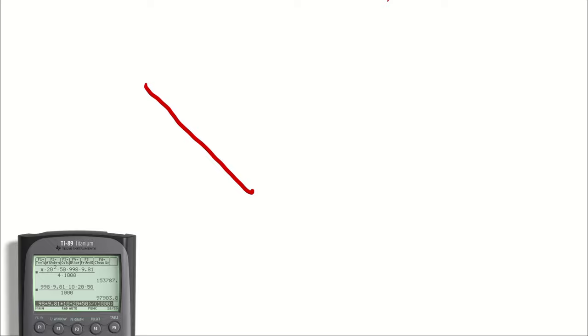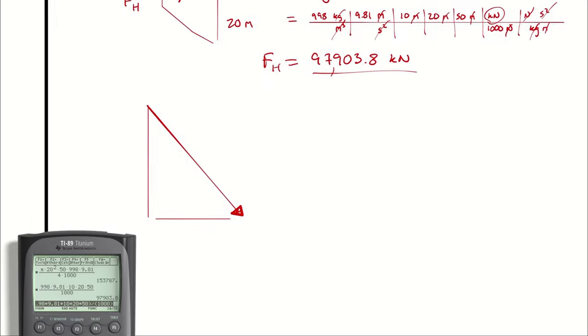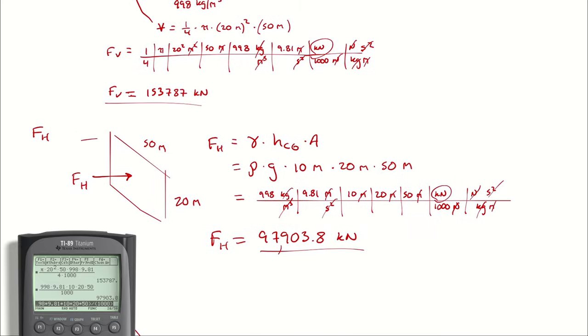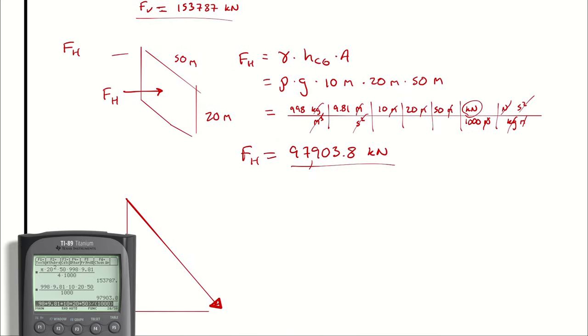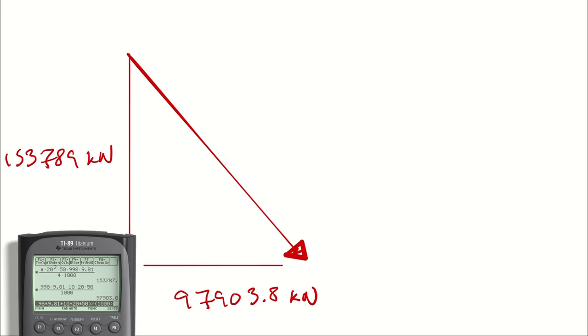So our actual hydrostatic force — the answer we care about — is a force which has a vertical component of 153,789 kilonewtons and a horizontal component of 97,903.8 kilonewtons respectively.